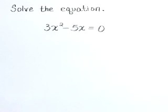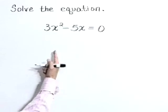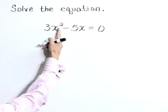Solve the equation. 3x squared minus 5x is equal to 0. Here we have a quadratic equation. We see that 2 in the exponent.